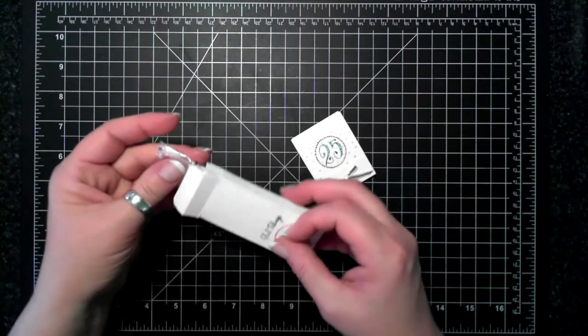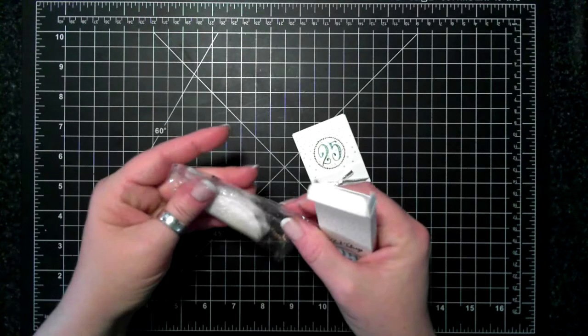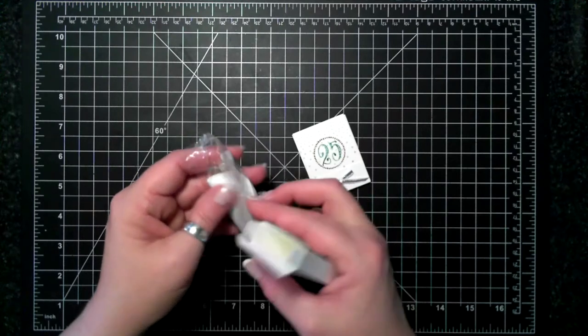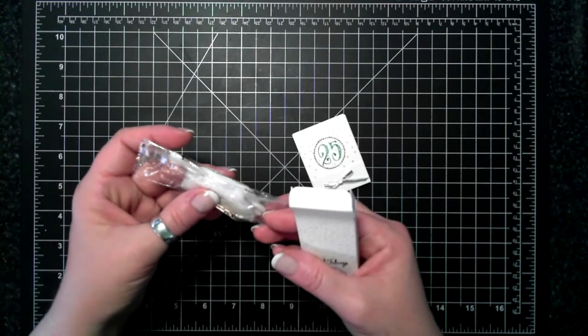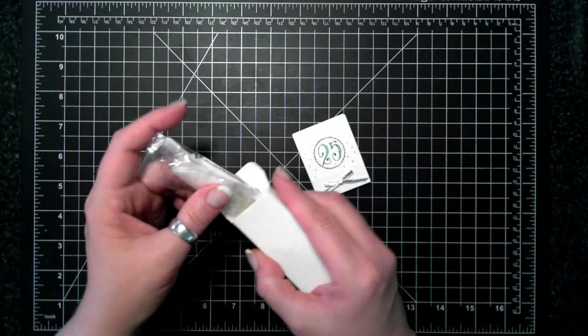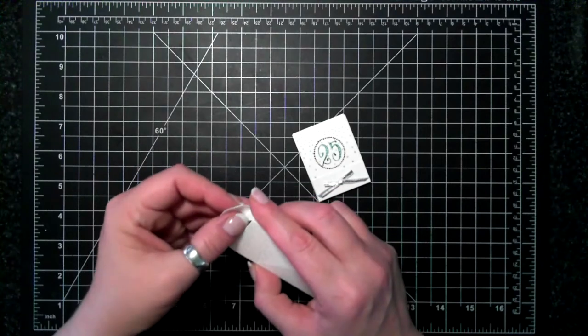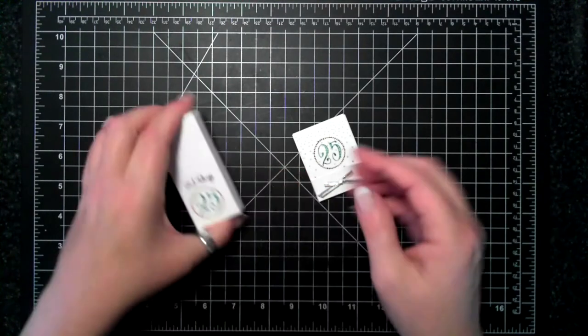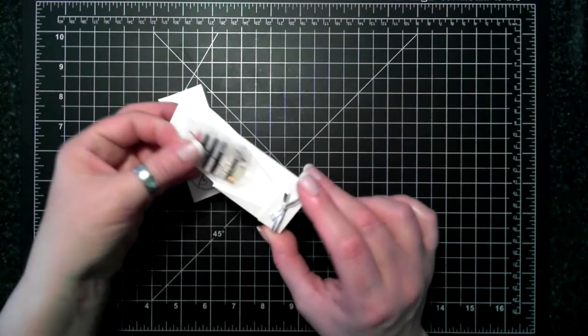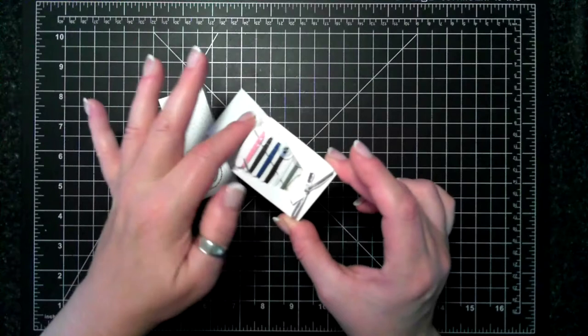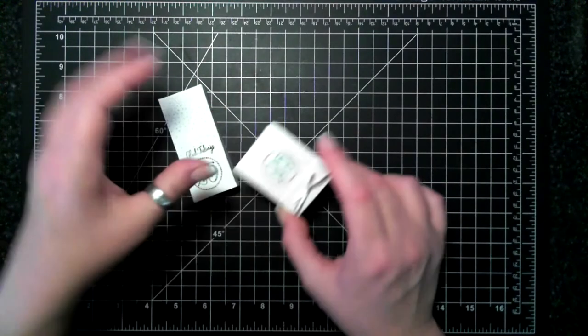What's inside is those vanity kits that you get from the fancy hotels or actually any hotel. There's a couple of ear swabs and a little emery board and a facial cleansing pad. And the other one has a sewing kit.